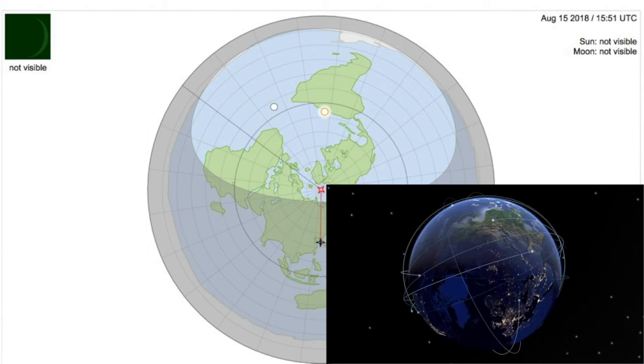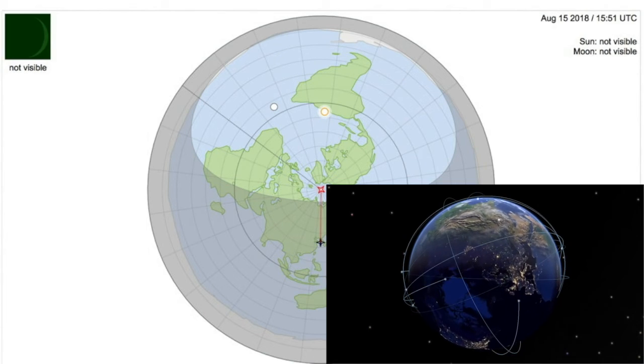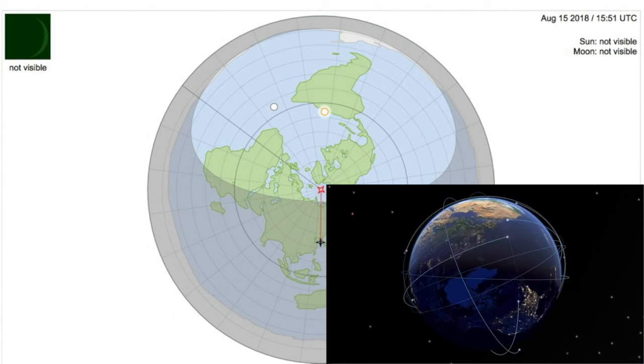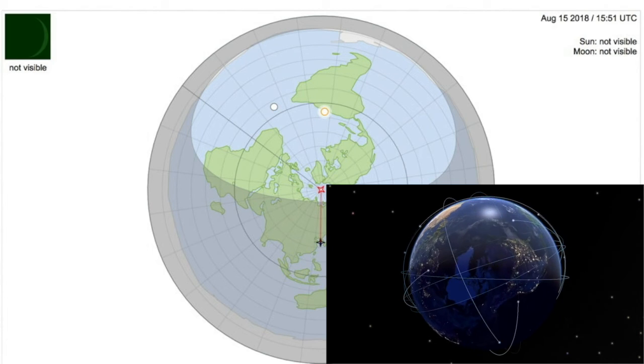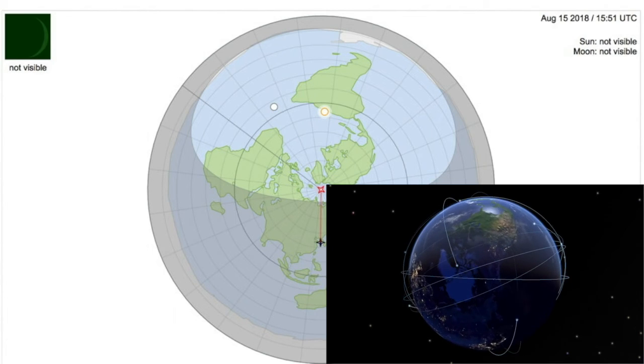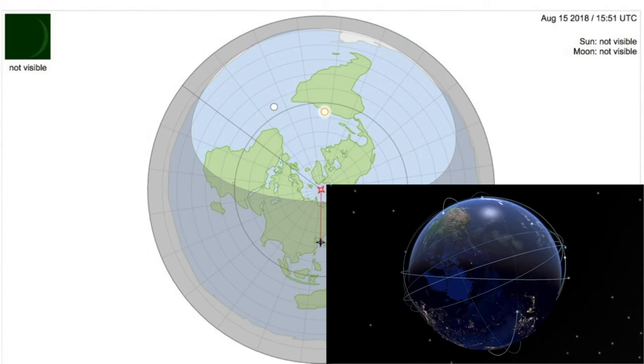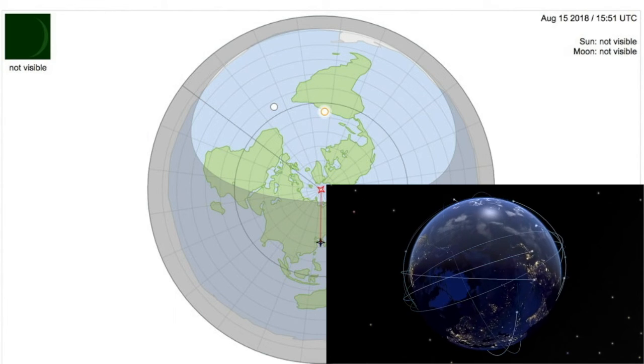Some flat Earth advocates would propose that meteors are pieces of the firmament falling from the sky. But why are they regular on specific dates of the year? And how does that explain their visibility and timing during the day?